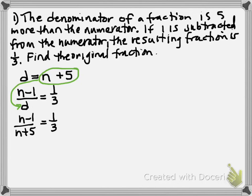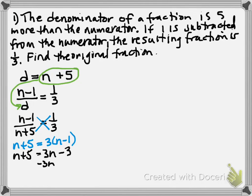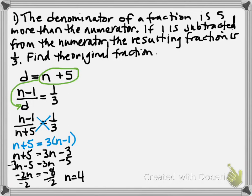Then we use cross products: n plus five times one equals three times the quantity n minus one. We distribute and get three n minus three. We subtract three n from both sides, then subtract five from both sides, getting negative two n equals negative eight. Dividing both sides by negative two, we get n equals positive four. So the numerator of the fraction is four.